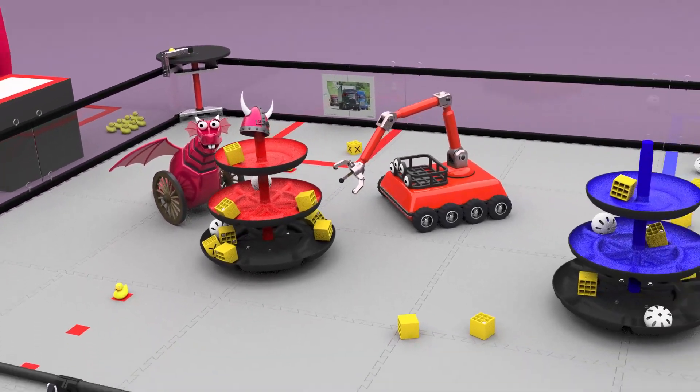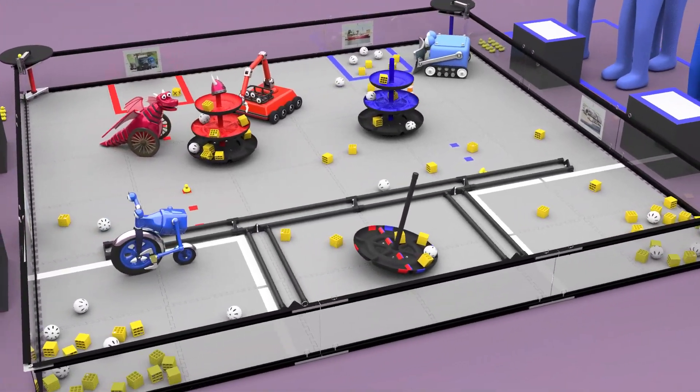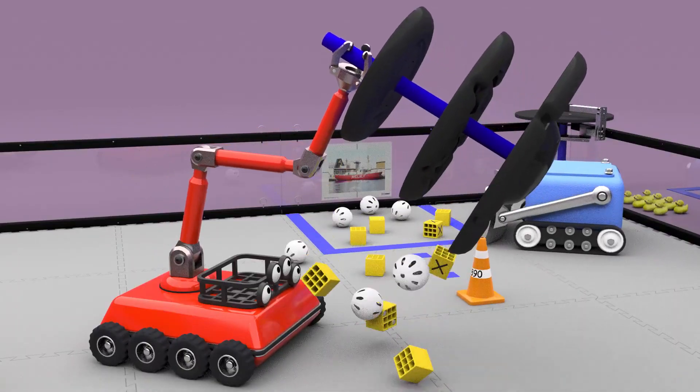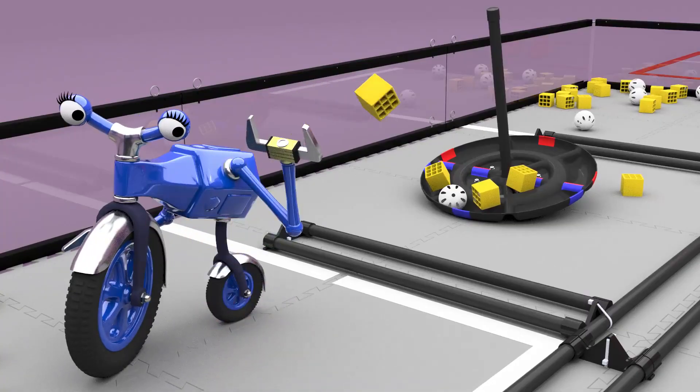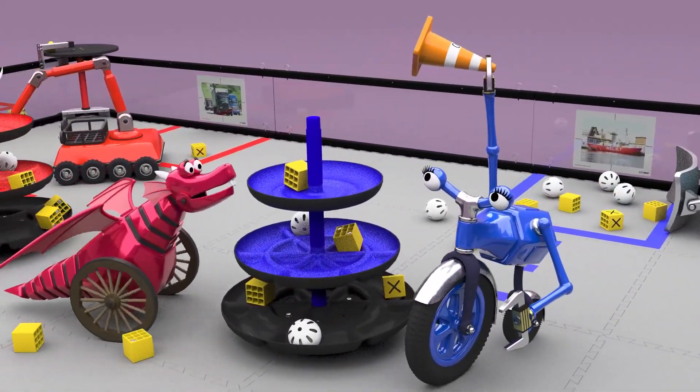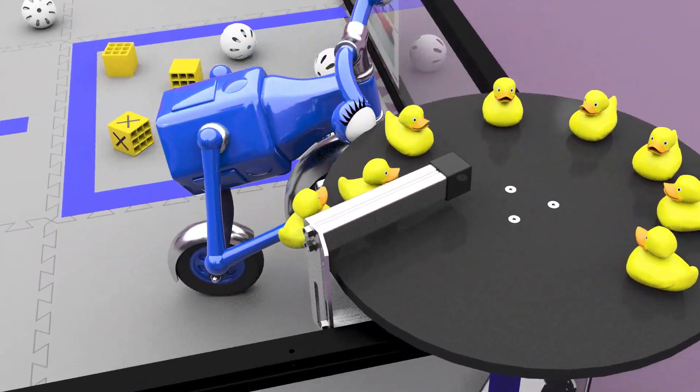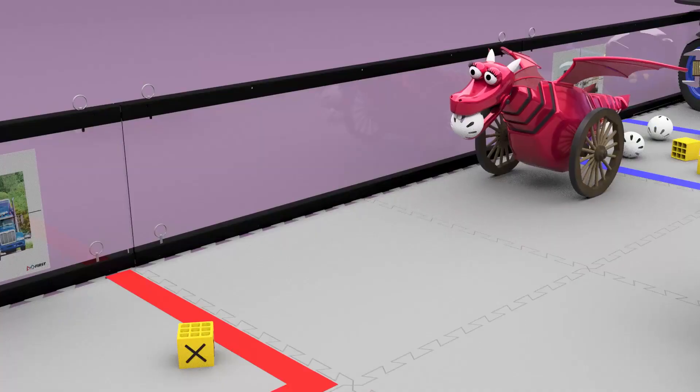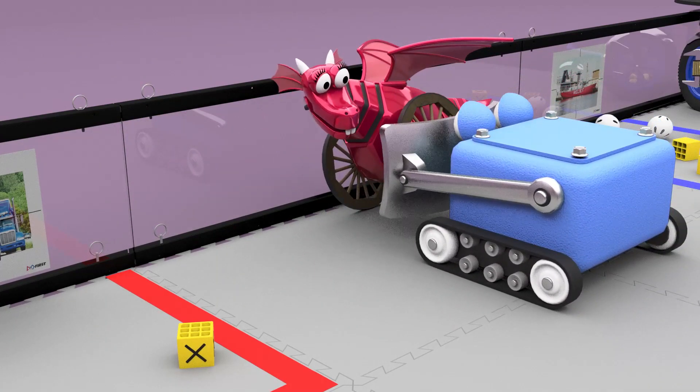There are many ways to score in Freight Frenzy, but there are also rules that if not followed will deduct points from your alliance. For example, robots cannot interfere or interact with the opposing alliance shipping hub. Scoring elements may not be launched. Robots may not interfere with their opposing alliance's capping attempts. Only one duck or team shipping element is allowed on the carousel at a time. A robot may not cause an opposing alliance robot to become pinned, trapped, or blocked.